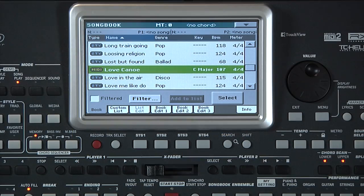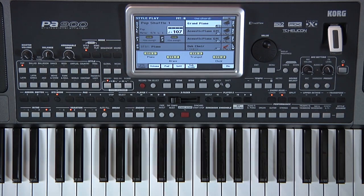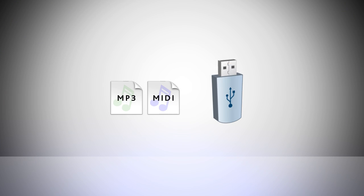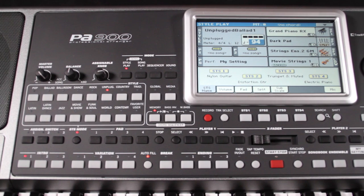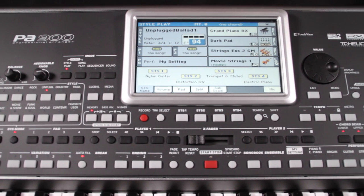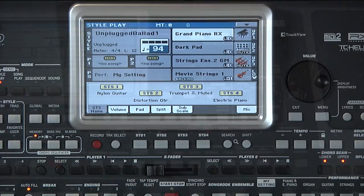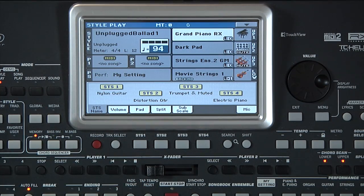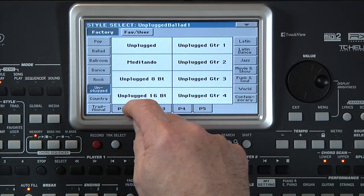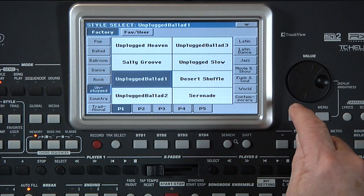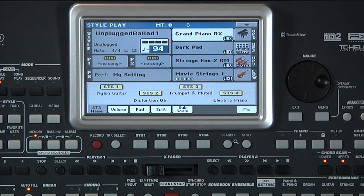We assume you're familiar with the Korg Arranger interface and with the operations related to style and song play modes. A USB pen drive containing a standard MIDI file and an MP3 are required to do some of the exercises. We're using a PA-900 but other models work in a similar way. There are a few differences — for example, I may refer to media mode on the PA-900 where this is called disk in previous models. Don't worry if styles, sounds, or Songbook entries are organized differently than shown; simply select any other and continue to follow along.